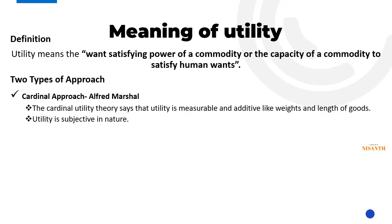Utility is subjective because the satisfaction level depends on the individual person. Also, utility is measurable in terms of money — that means if you have 10 rupees' worth of satisfaction, we can express utility in monetary terms. This is the basis of the cardinal approach.